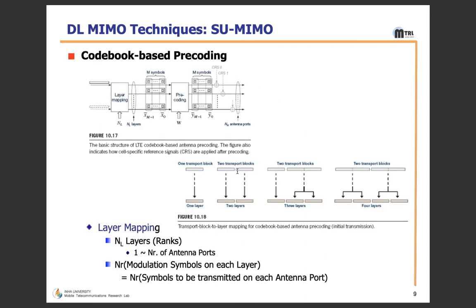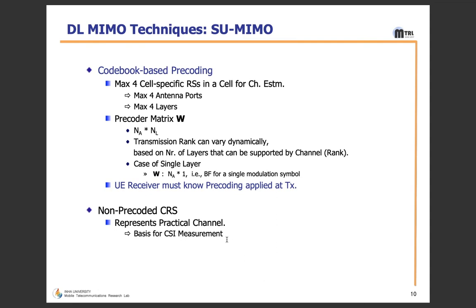In codebook-based precoding, the number of layers N_L depends on the number of available antennas — one layer per antenna up to four layers for four antennas. N_R is the number of modulation symbols on each layer to be transmitted on each antenna port. For codebook-based precoding, a maximum of four cell-specific reference signals are used in a cell for channel estimation, meaning a maximum of four antenna ports and four layers. The precoded matrix size is the number of antenna ports multiplied by the number of available layers. Transmission rank can vary dynamically. When we have a single layer, the precoded matrix is N×1. The UE receiver must know the precoding applied.